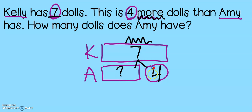So I'm going to count down to find my missing number: seven, six, five, four, three. That means Amy has three dolls. And since she has the smaller bar, I know that she will have less than Kelly.